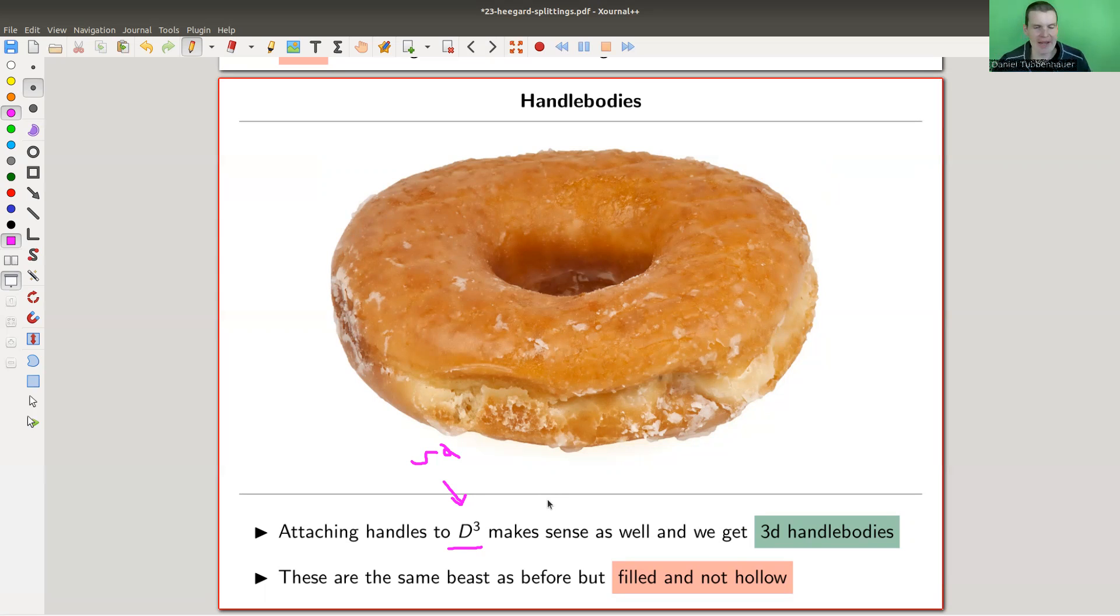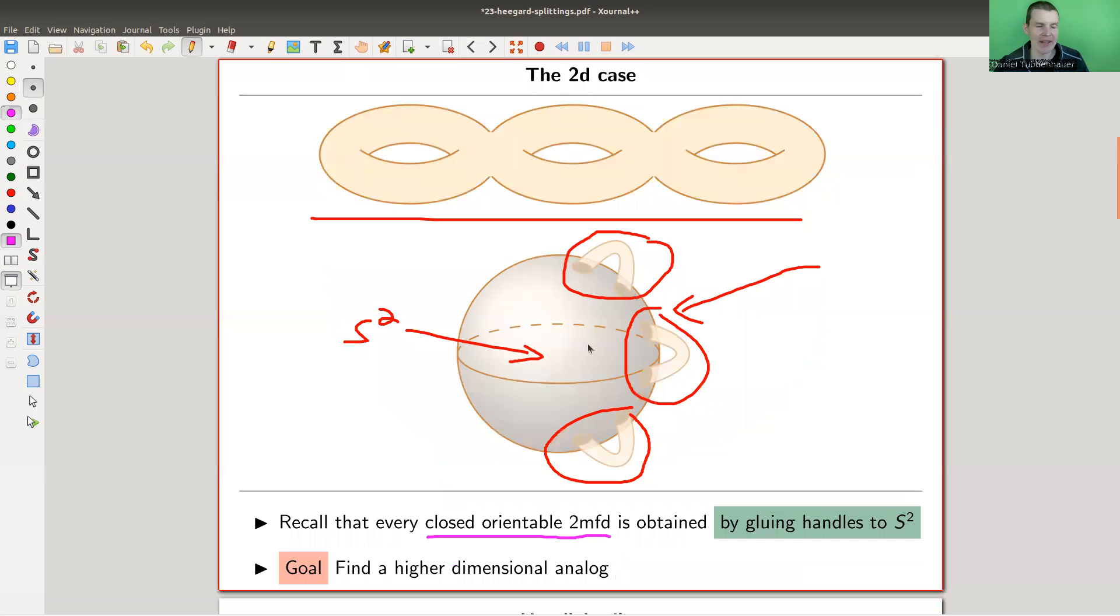So it's a not hollow ball. And you can still attach handles to that. It's the same process. It's actually the same picture, just that this one is D³. So it's not hollow anymore. It's a bowling ball.